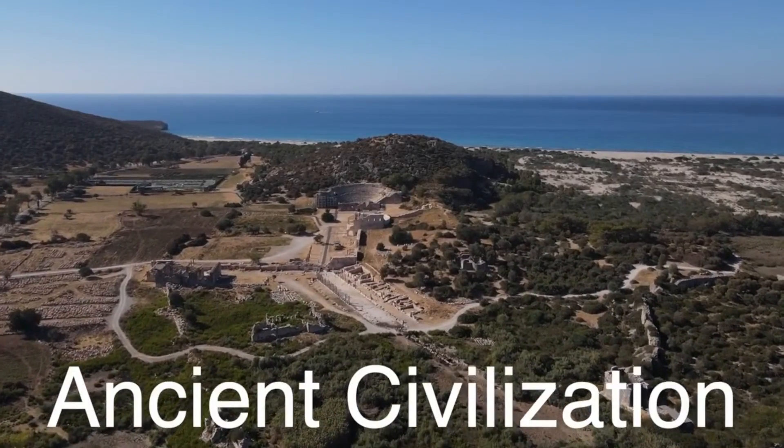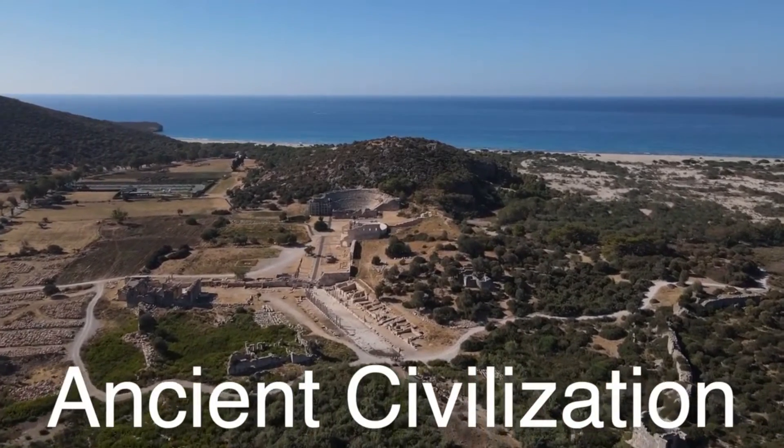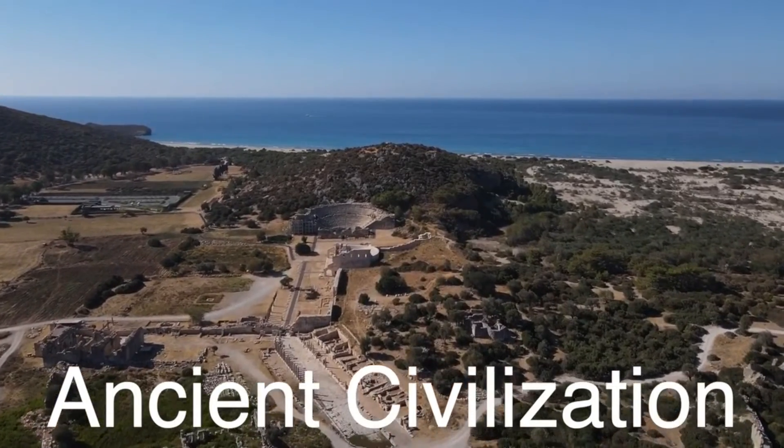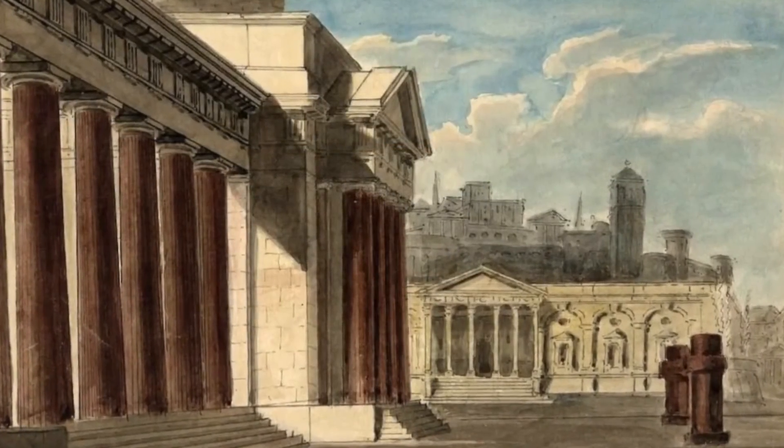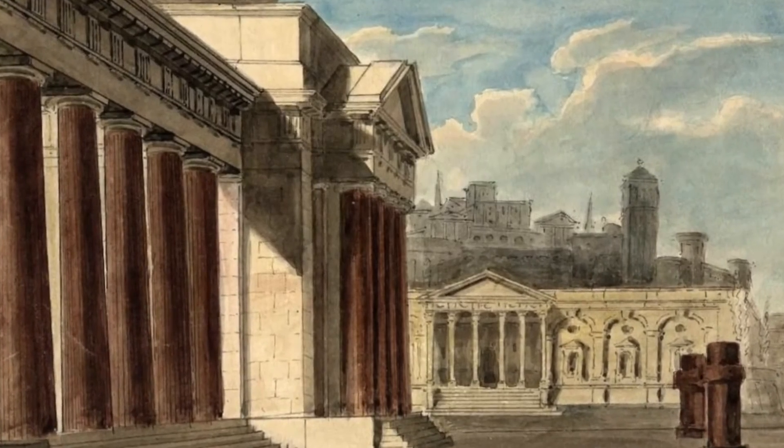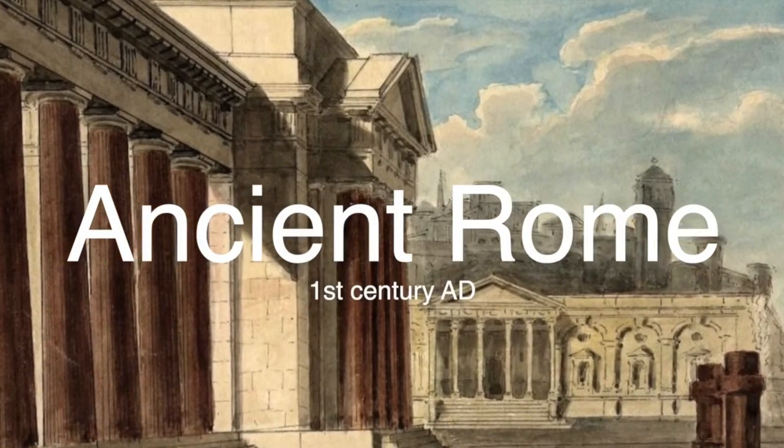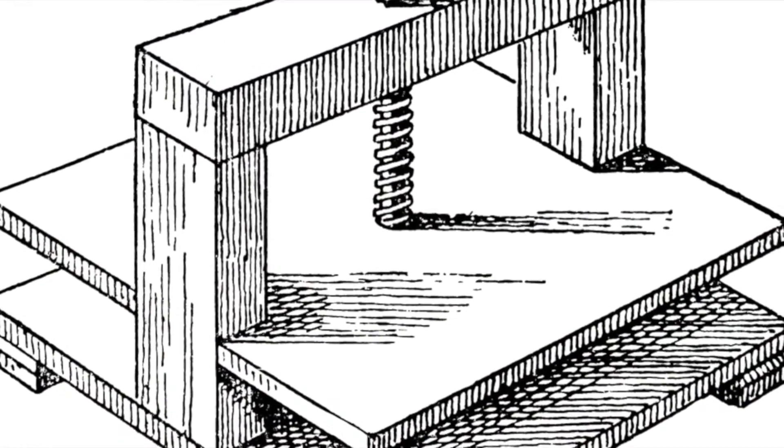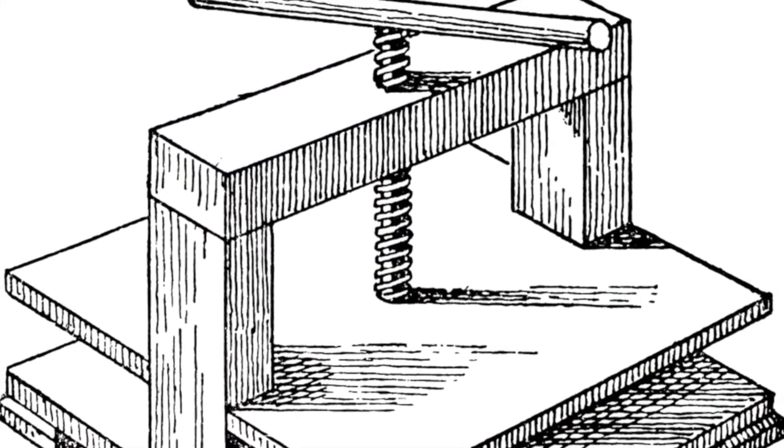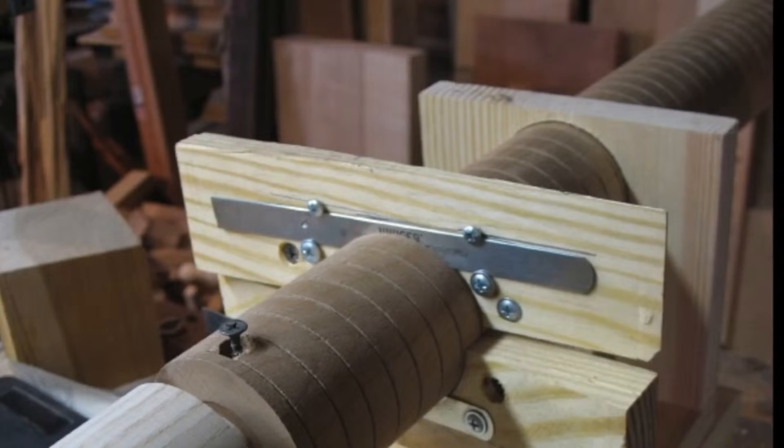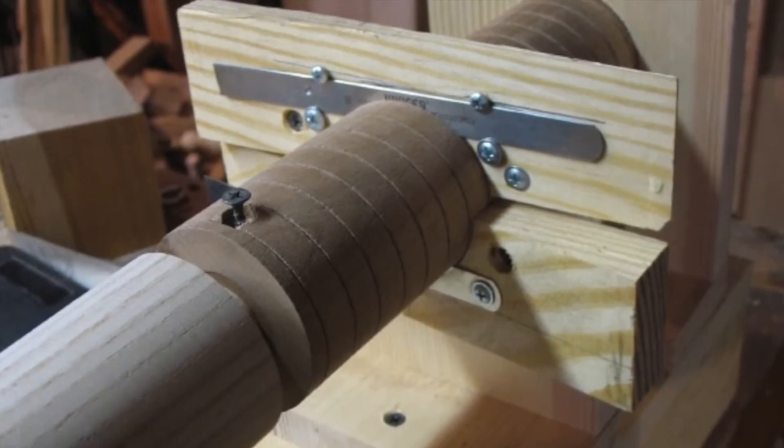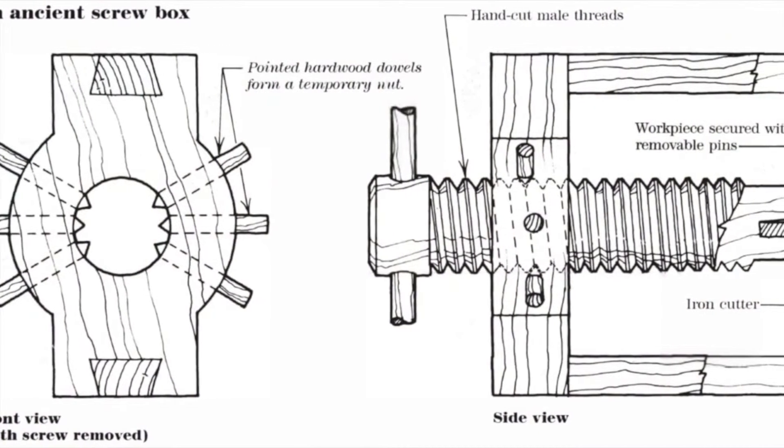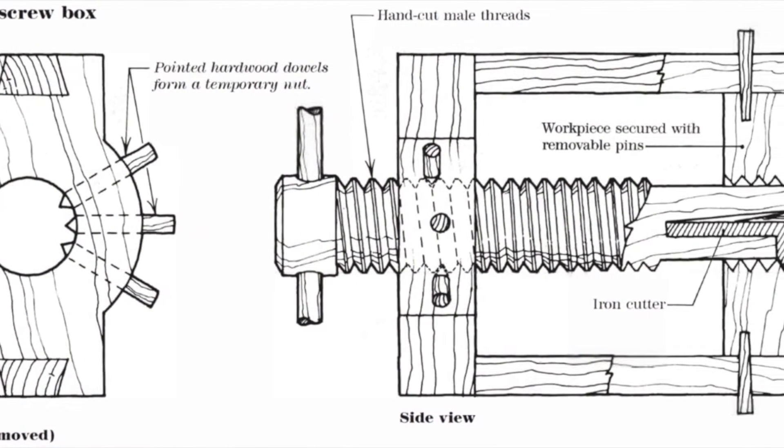Our story begins in ancient civilizations, where the basic concept of fastening objects together using a rotational force was already understood. The earliest evidence of tools resembling screwdrivers dates back to ancient Rome, around the first century AD. These rudimentary tools were used to turn screws made of wood, a material more readily available and easier to manipulate than metal. Roman craftsmen used these early screwdrivers to assemble and repair their wooden structures, demonstrating an advanced understanding of mechanical principles for their time.